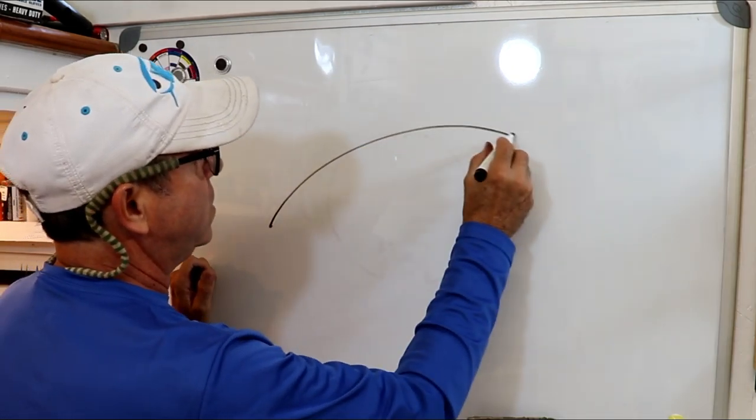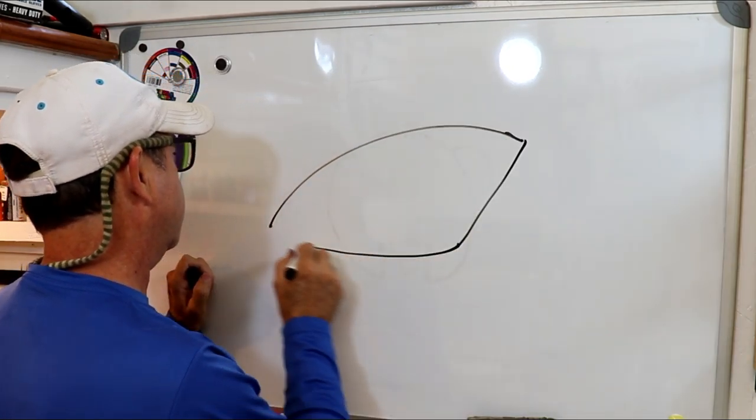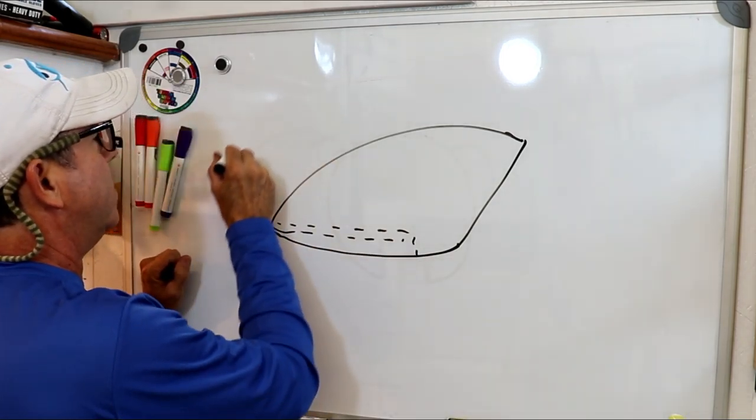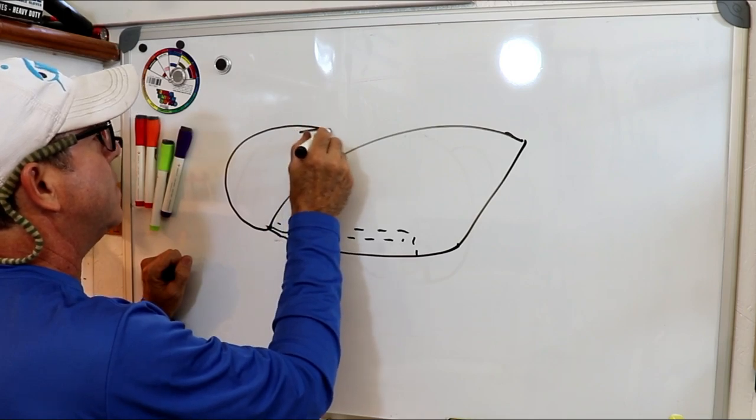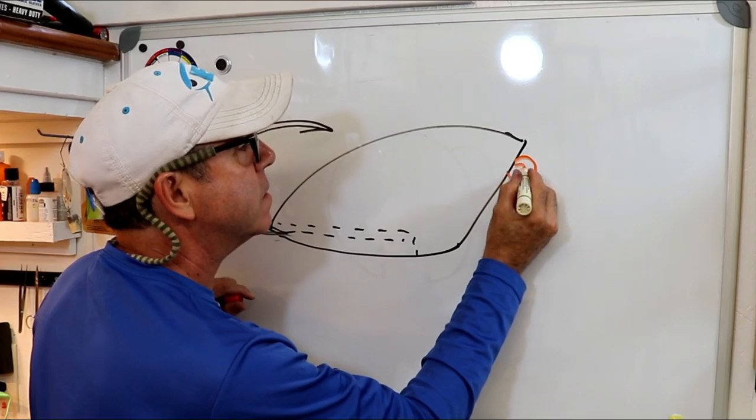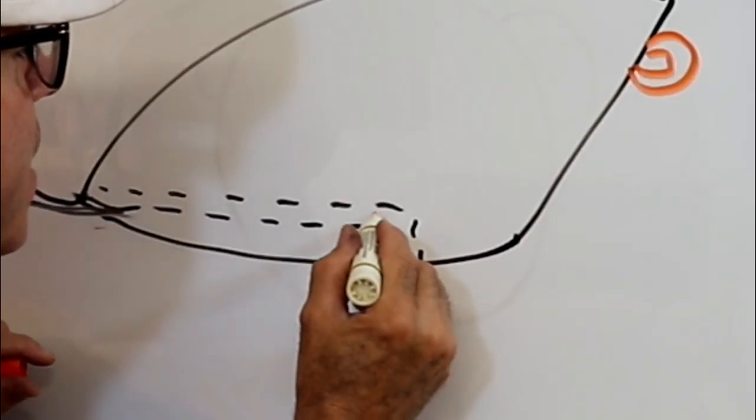If the lure looks somewhat like this and you have that channel in it where the hook comes out like this.